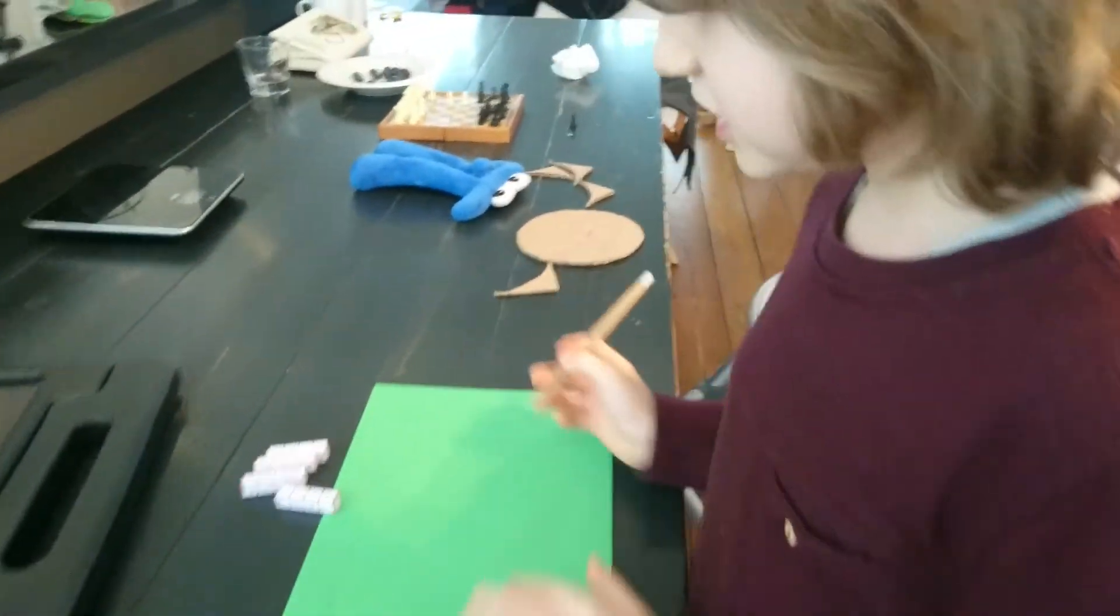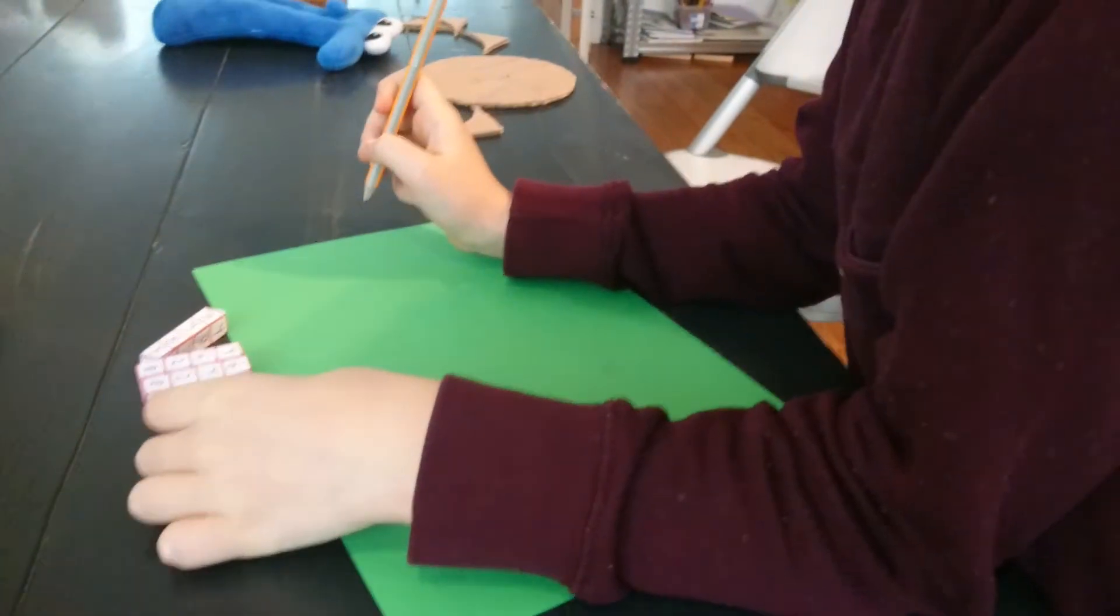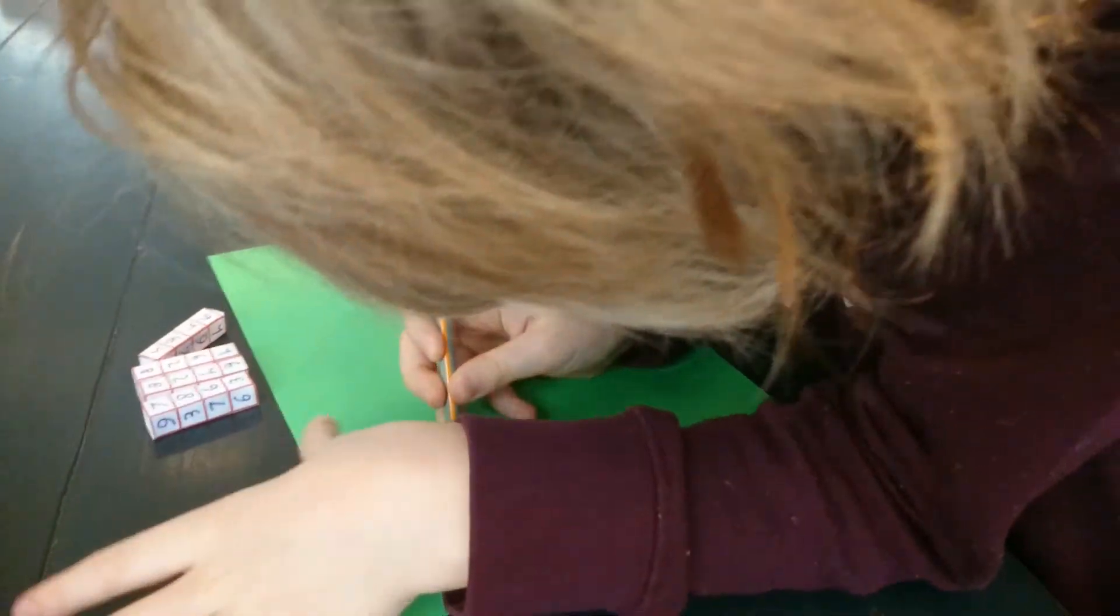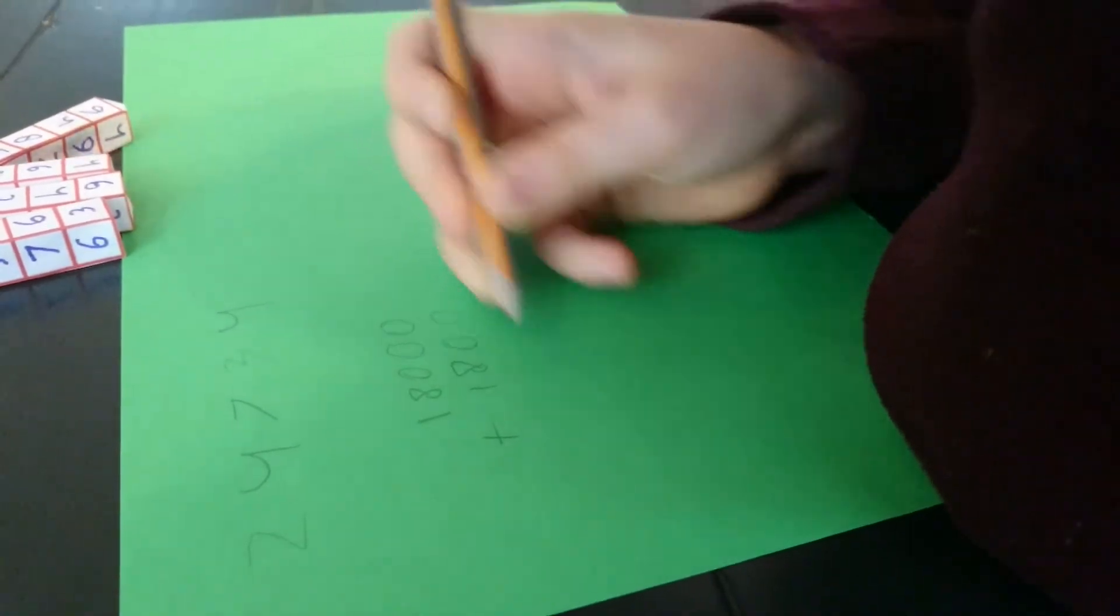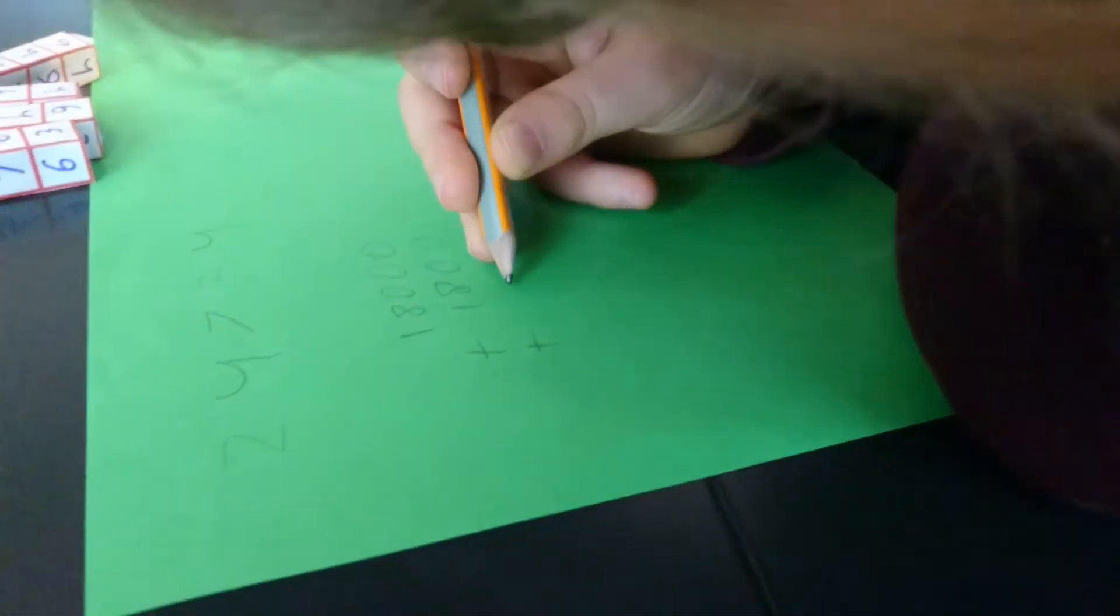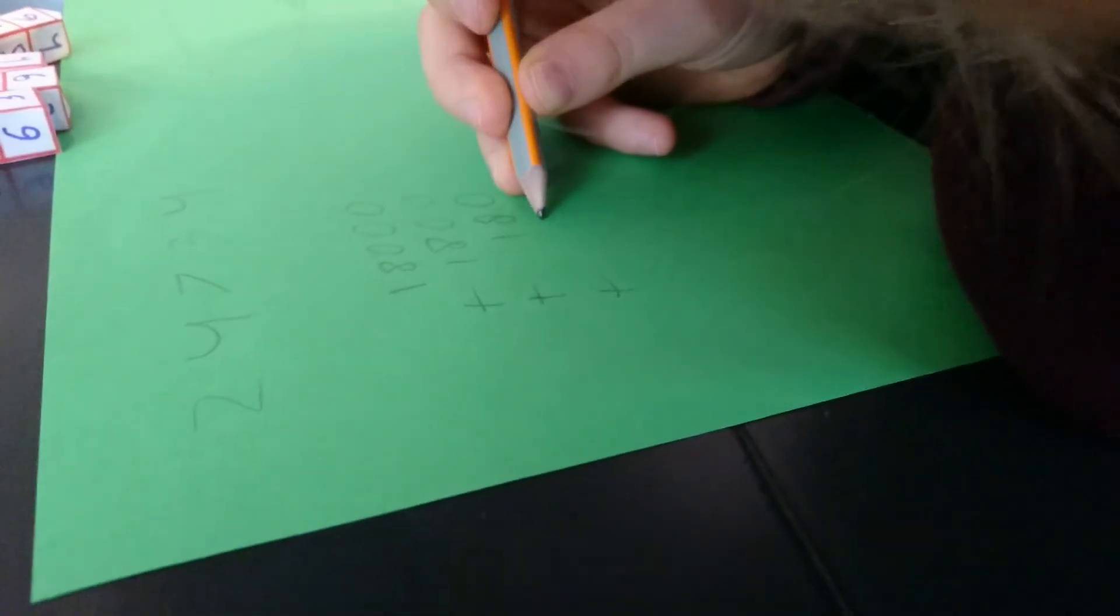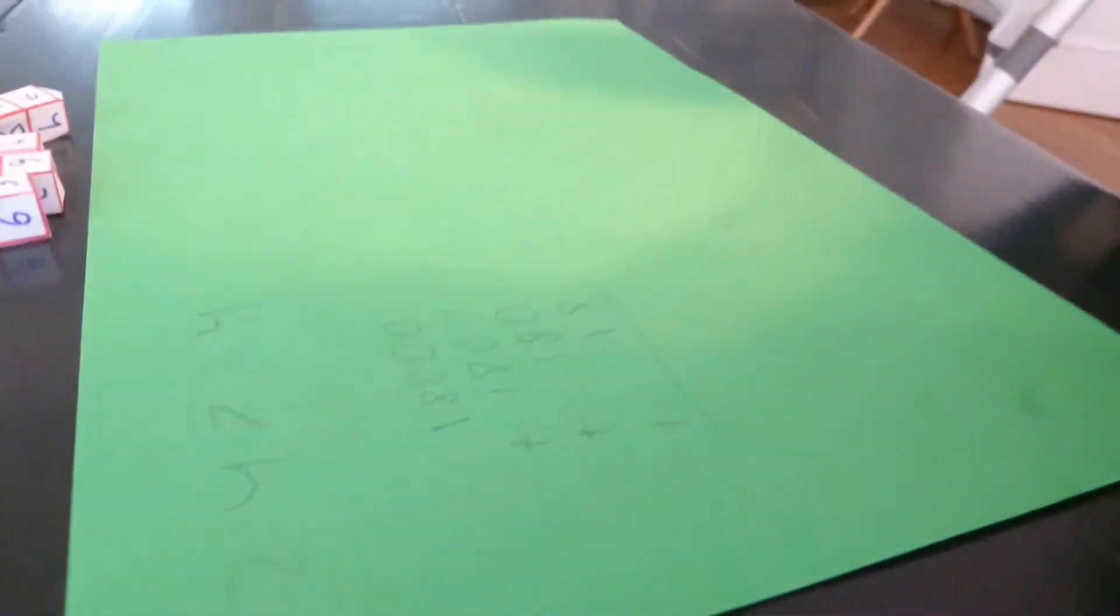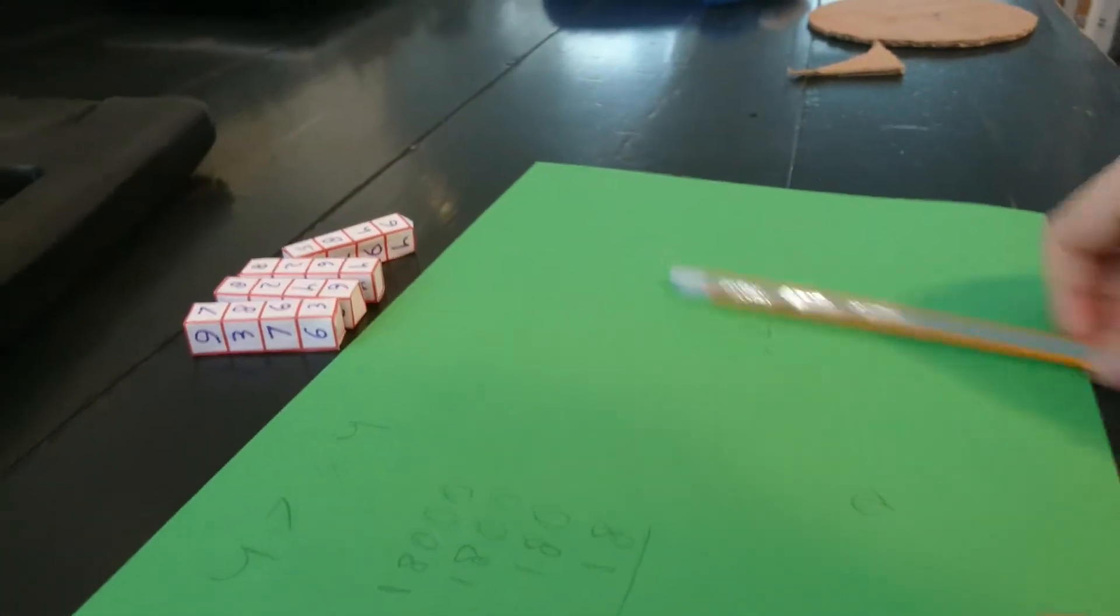So basically for the first digit we have 18,000. For the second digit we have 1,800. For the third digit we have 180, and for the fourth digit we just have 18.